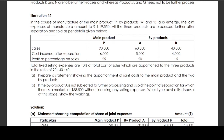If by-product A is not subjected to further processing and is sold at the point of separation, for which there is a market of Rs 58,500 without incurring any selling expenses, what do you advise regarding its disposal at this stage? Show the workings.